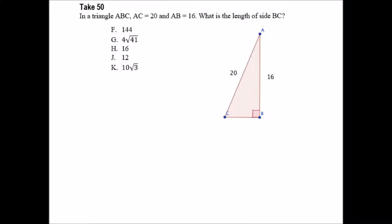In this problem, we have to find the measure of side BC right here, given the measure of sides AB and AC. This is a right triangle, so it follows the Pythagorean theorem: A squared plus B squared equals C squared.